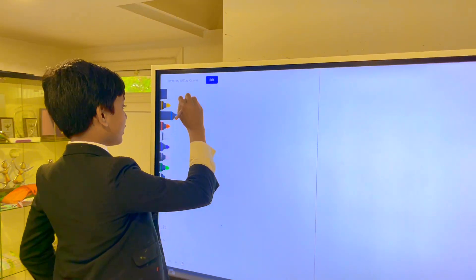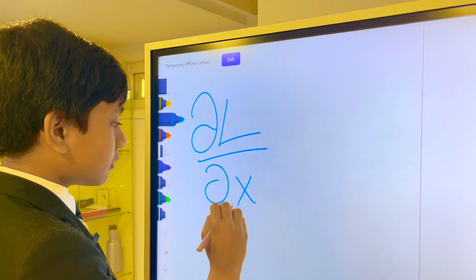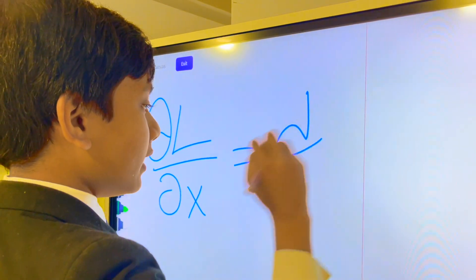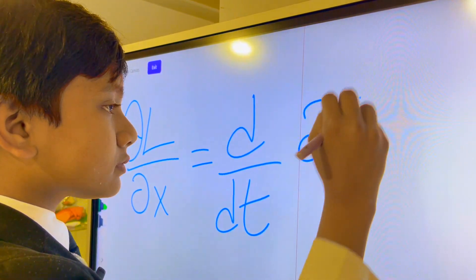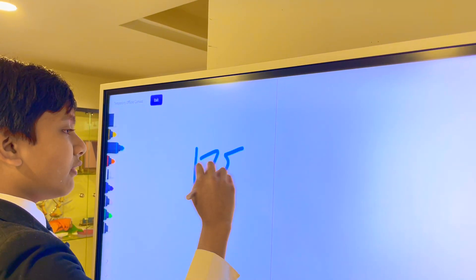Today we're going to be covering the Euler-Lagrange equation. Now this is going to be a very simple introduction, but basically this is what the Euler-Lagrange equation looks like. Now first, if you really want to know the history of this, in the 1750s,